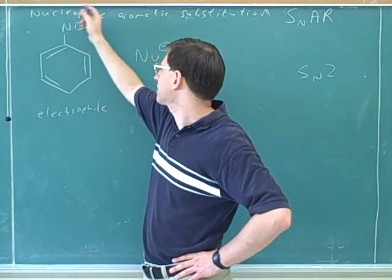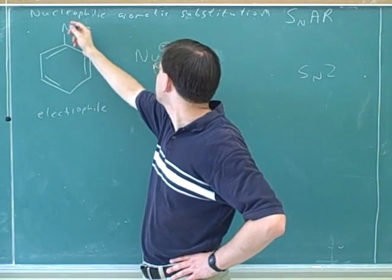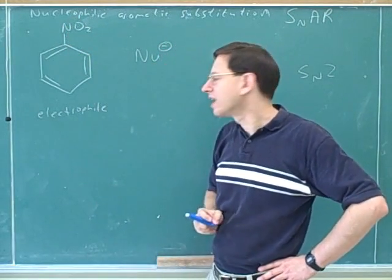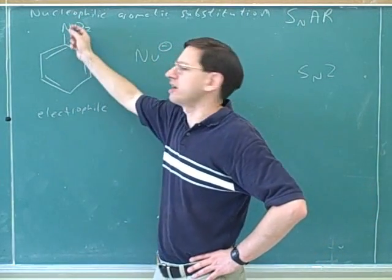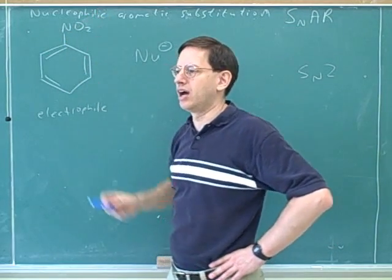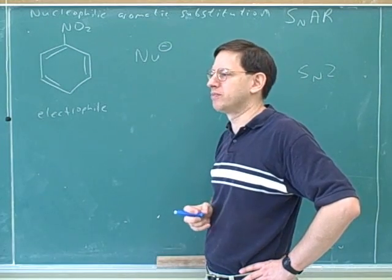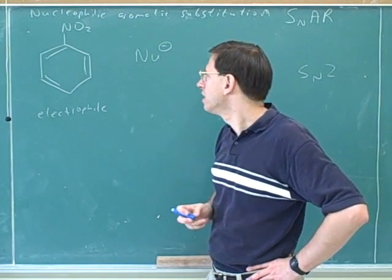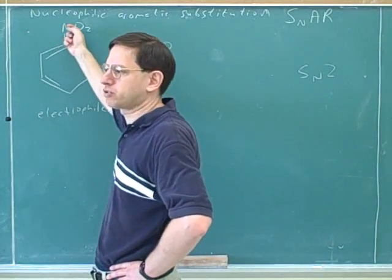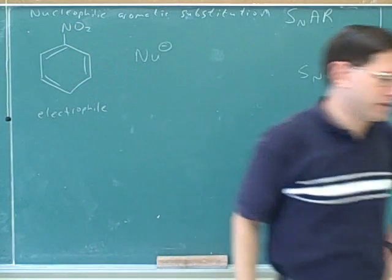Nitro would make it harder to do an electrophilic substitution, but it's making it easier to do a nucleophilic substitution. In fact, this is actually a requirement. We need to have an electron withdrawer on the ring. And actually, the one that's almost always used is nitro groups. We need at least one electron withdrawer to do this nucleophilic substitution.